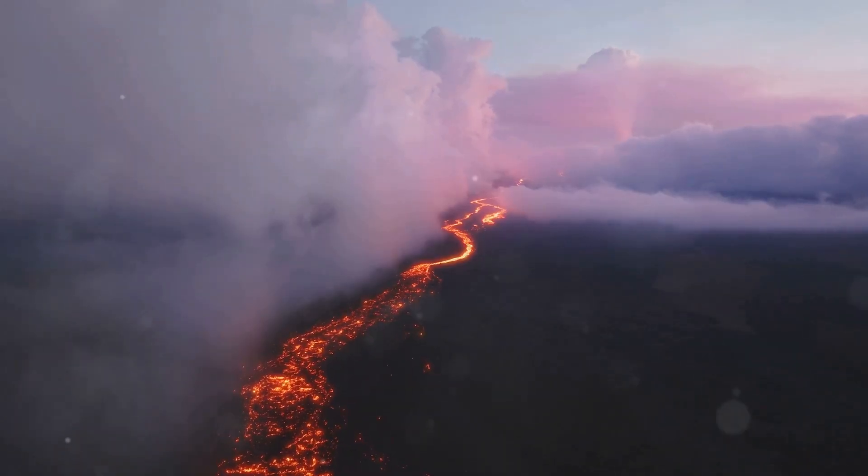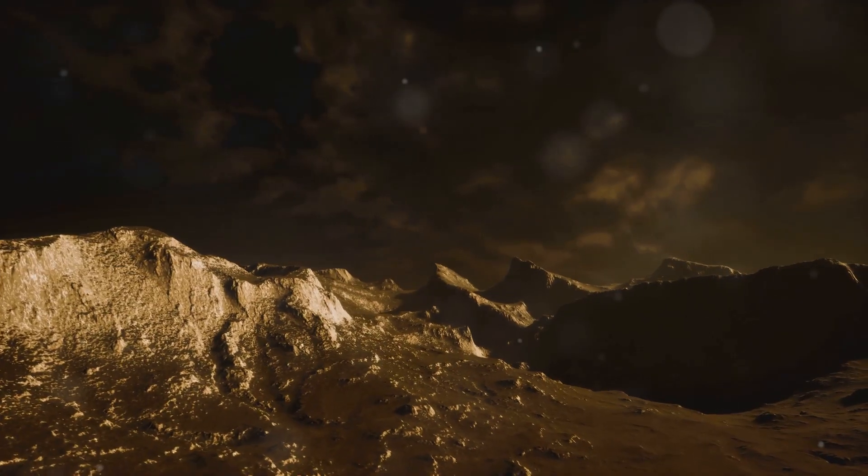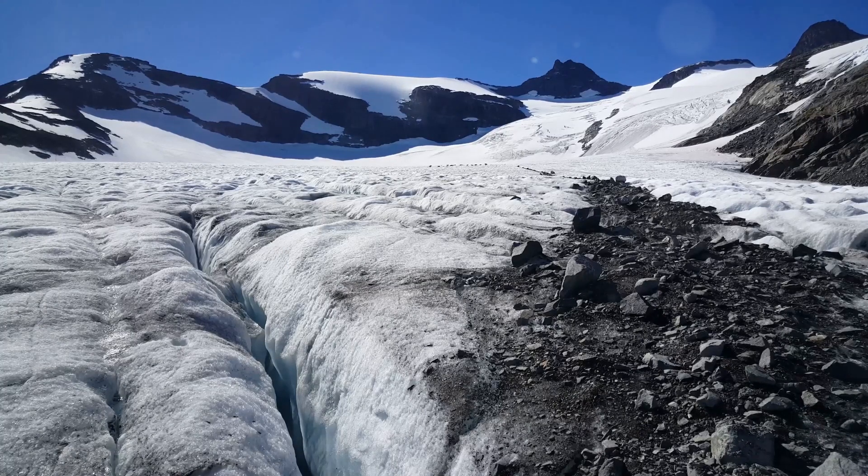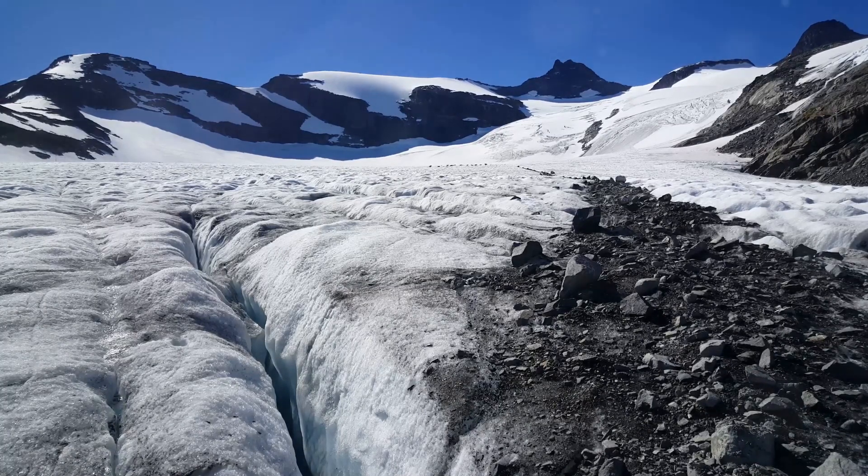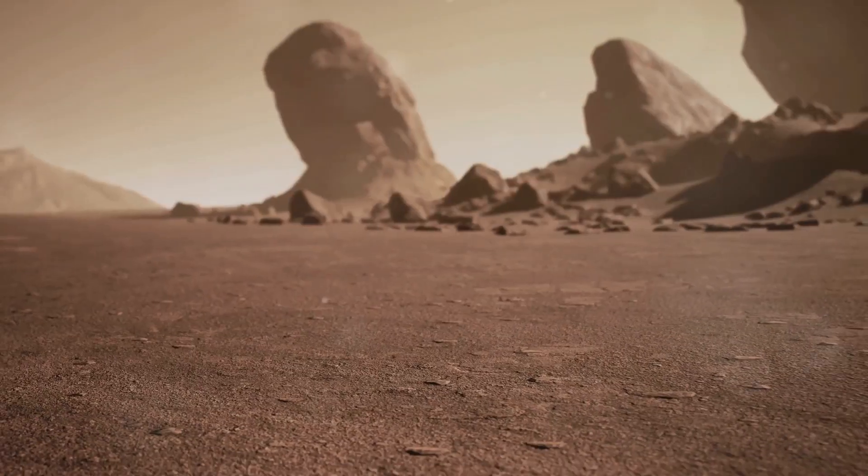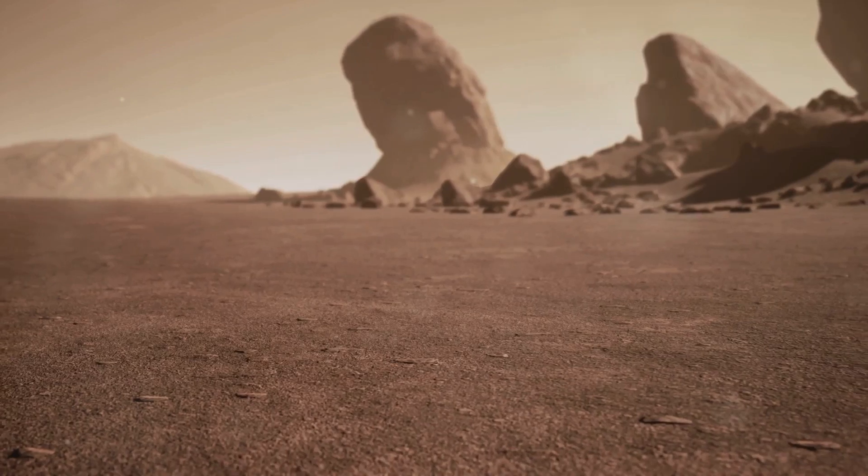Imagine a world where volcanoes erupt constantly, spewing lava and ash into the sky. The night side of Korot 7b is no less forgiving. With temperatures plummeting to minus 350 degrees Fahrenheit, it's a frozen wasteland shrouded in eternal darkness. This planet is a stark reminder that the universe is a place of extremes, where life as we know it is impossible. The sheer violence of Korot 7b is a testament to the destructive power of the universe, a reminder that we are but tiny specks in a vast and unforgiving cosmos.